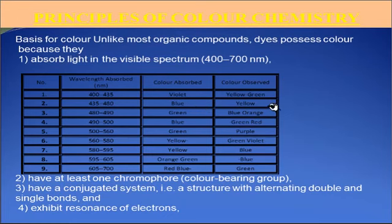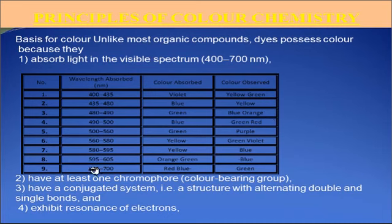Second wavelength range, 435 to 480 nanometers — color absorbed is blue, observed color is yellow. Third, wavelength 480 to 490 nanometers — color absorbed is green-blue, observed color is orange. Similarly, wavelength 605 to 700 nanometers — color absorbed is red-blue, but we observe green color.